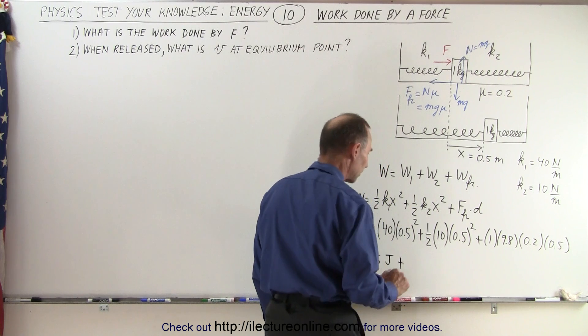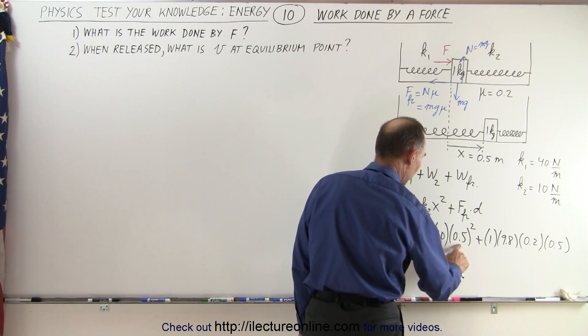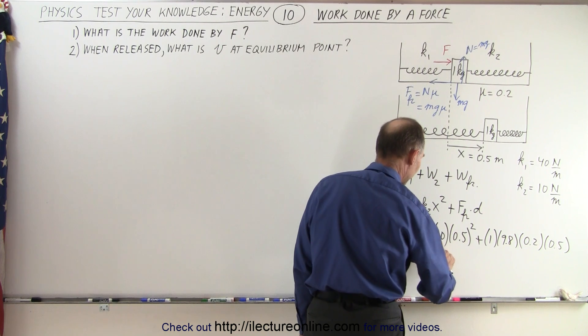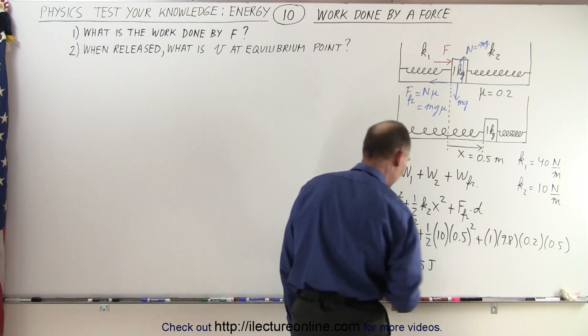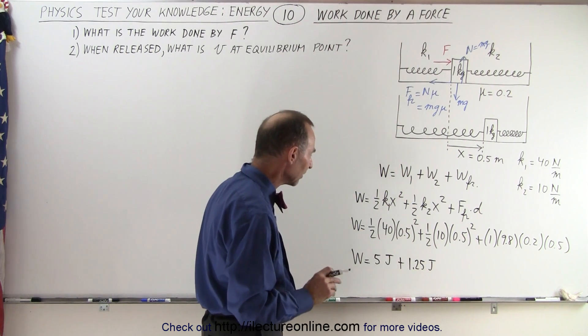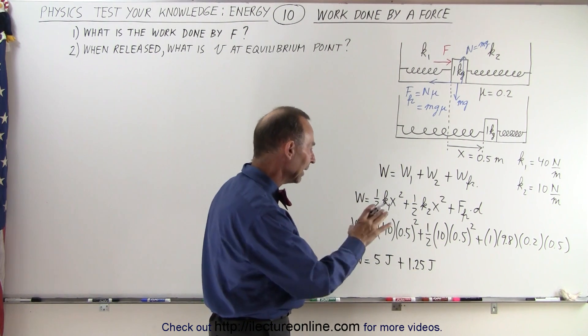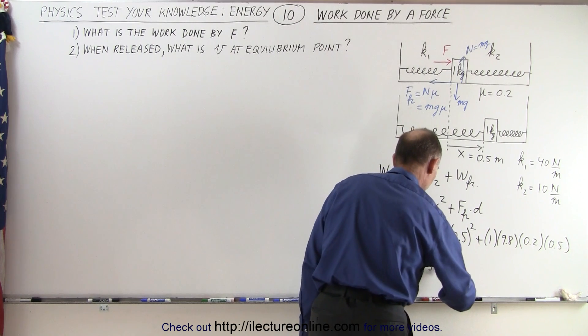Plus this would be 0.25 times 10, that is 2.5 times 1/2 which would be 1.25 joules, that would be half of 2.5. And then the amount of work done to overcome friction, that is 0.98 joules.